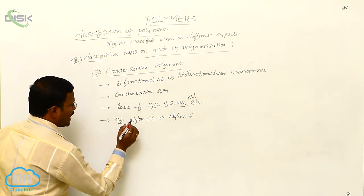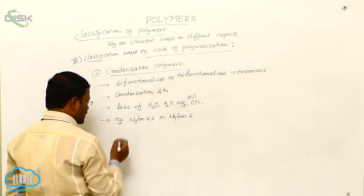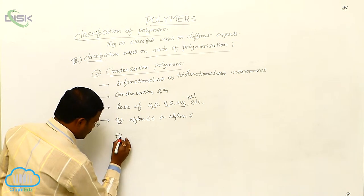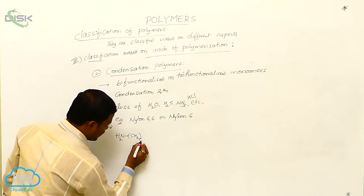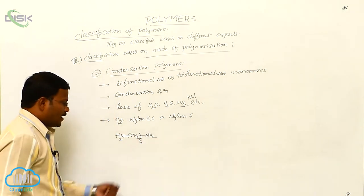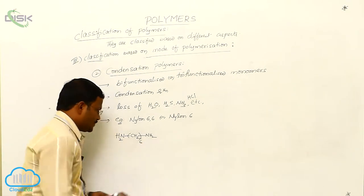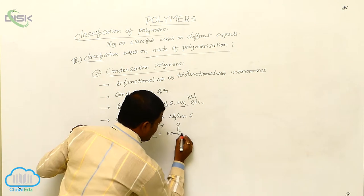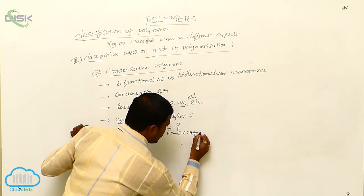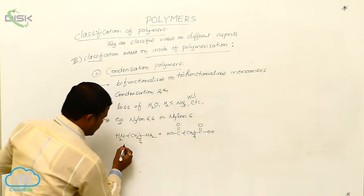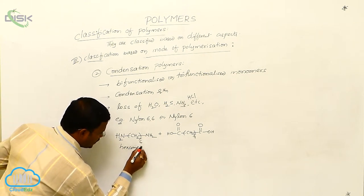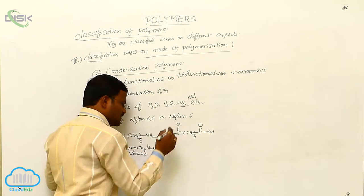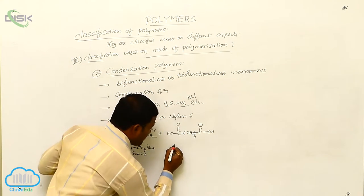Let us see how this nylon 6-6 is produced from condensation polymerization reaction. The two monomers required for the preparation of nylon 6-6 are hexamethylenediamine, which reacts with COOH-CH2-4-COOH. This is hexamethylenediamine as one monomer and another monomer used in the same reaction to produce nylon 6-6 is adipic acid.